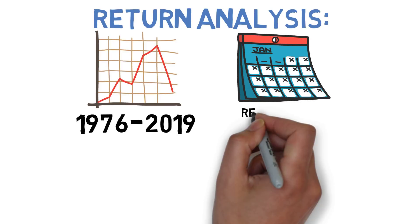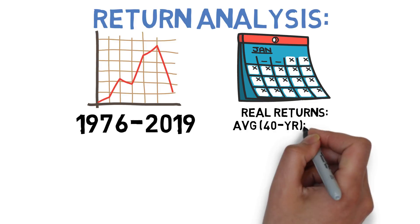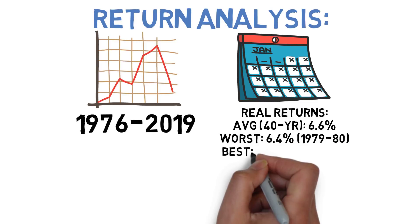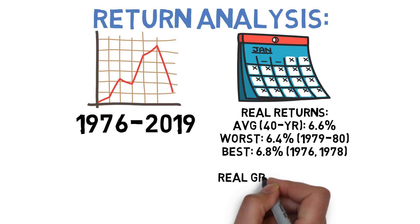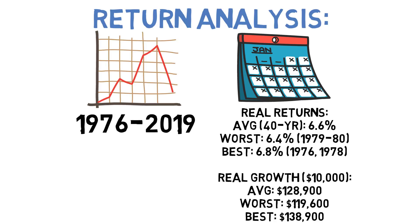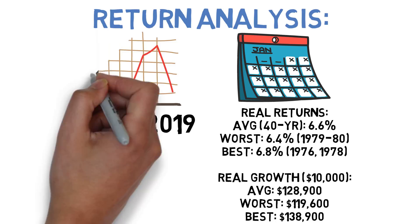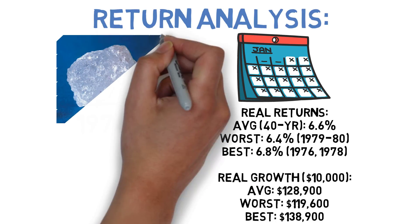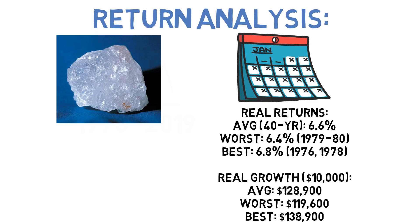Based on data since 1976, the average 40-year inflation-adjusted return for the Pinwheel Portfolio is about 6.6% per year. Its worst-case return was about 6.4% per year assuming you began investing in 1979 or 1980. Its best-case scenario was around 6.8% per year beginning in 1976 or 1978. That suggests a $10,000 investment would grow to on average $128,900 over 40 years after adjusting for inflation — at worst around $119,600 and at best $138,900. We'll also look at rolling 10-year inflation-adjusted returns to compensate for the limited number of 40-year timeframes available.